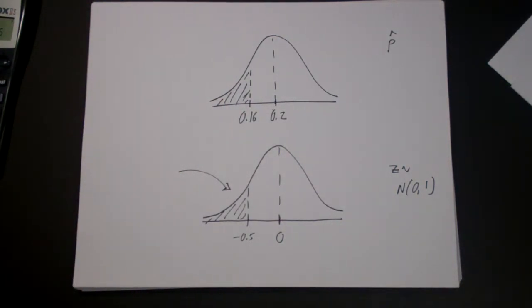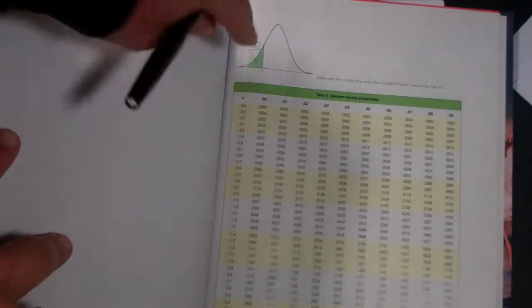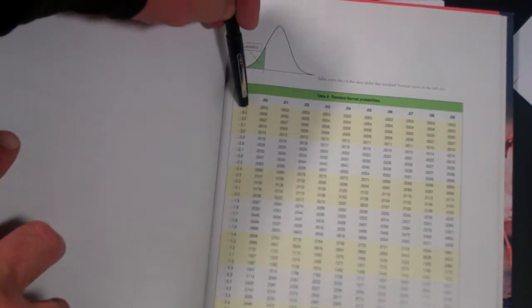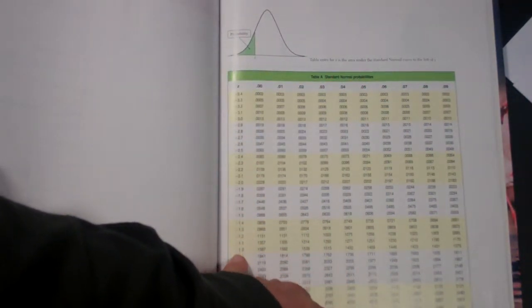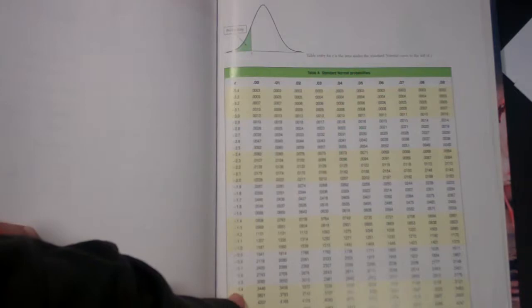And how do we do that? The way we do that is we're going to use a standard normal table. Later there will be a video on how to use a standard normal table if you need help with that. But let's look at the standard normal table and look at the value of negative 0.5. The thing about standard normal tables is they always give you the value to the left, or at least this one does. Most of them do. And they have both negative values and positive values. Here we want negative 0.5, so you go down 0.5 and you get right there.